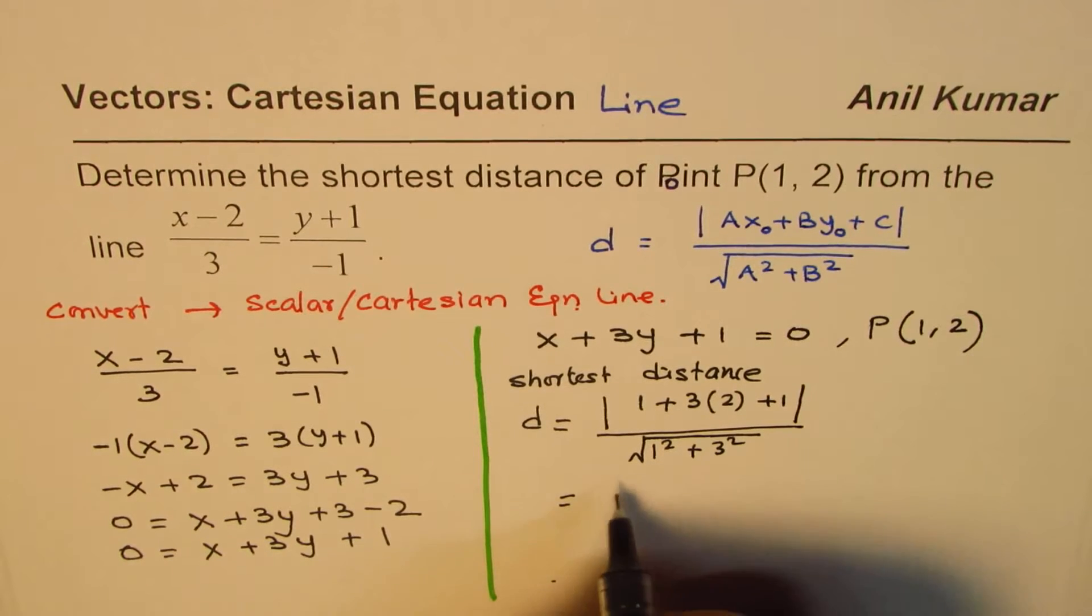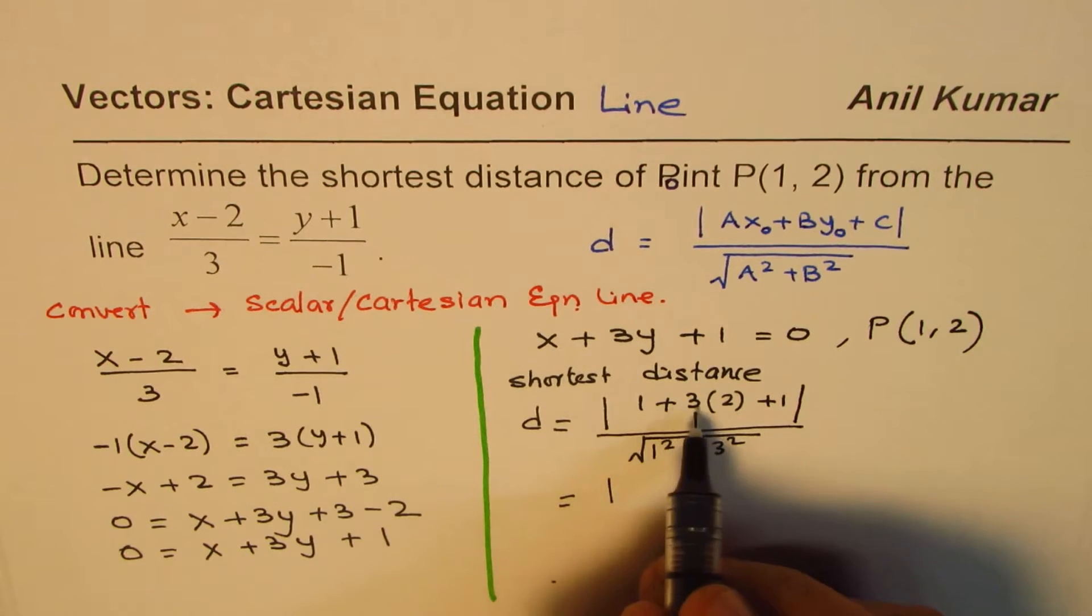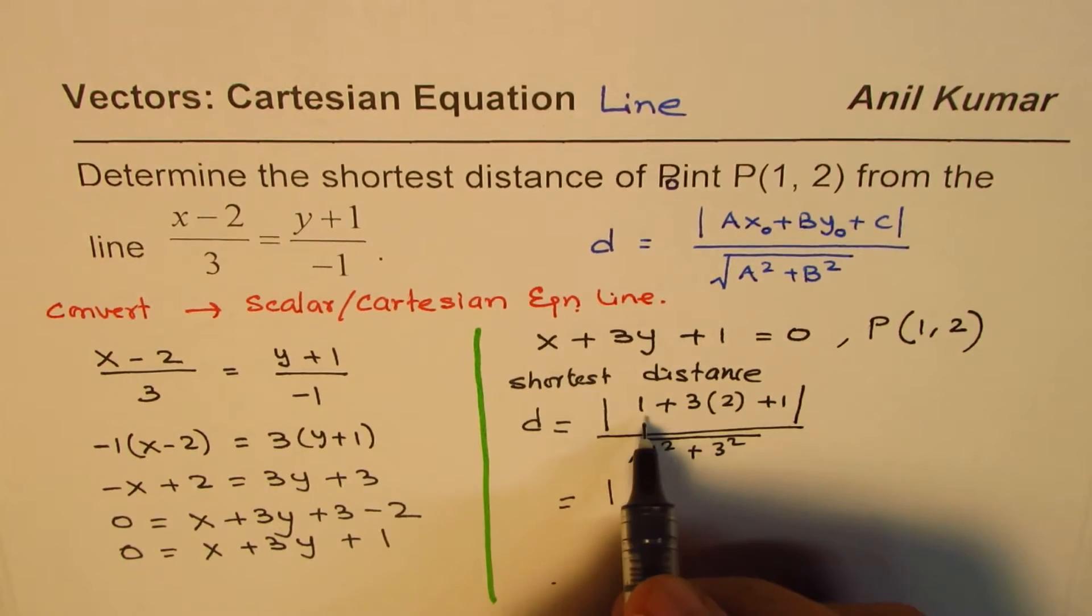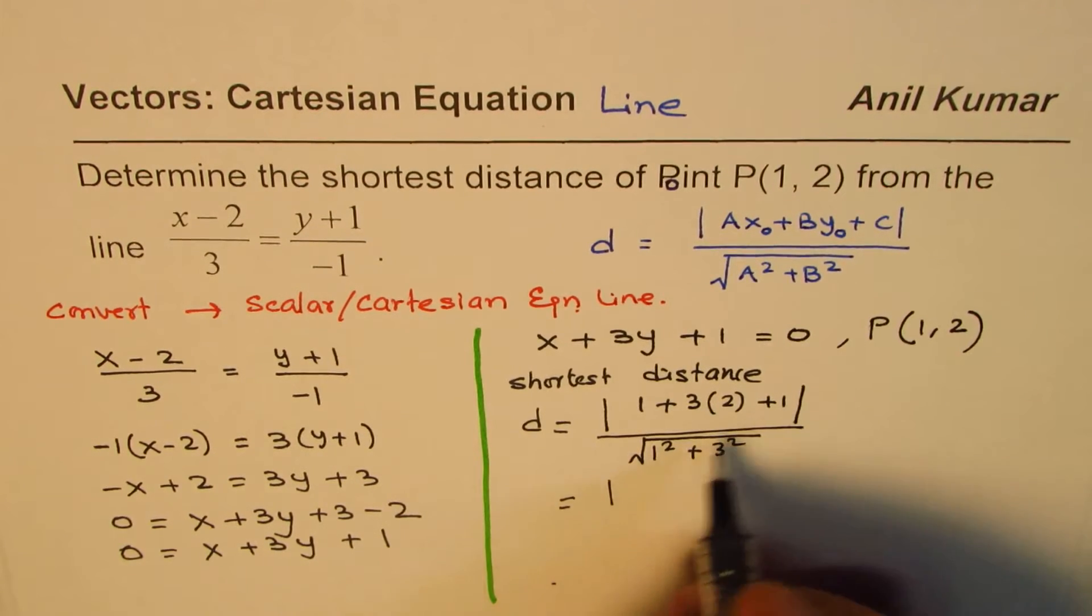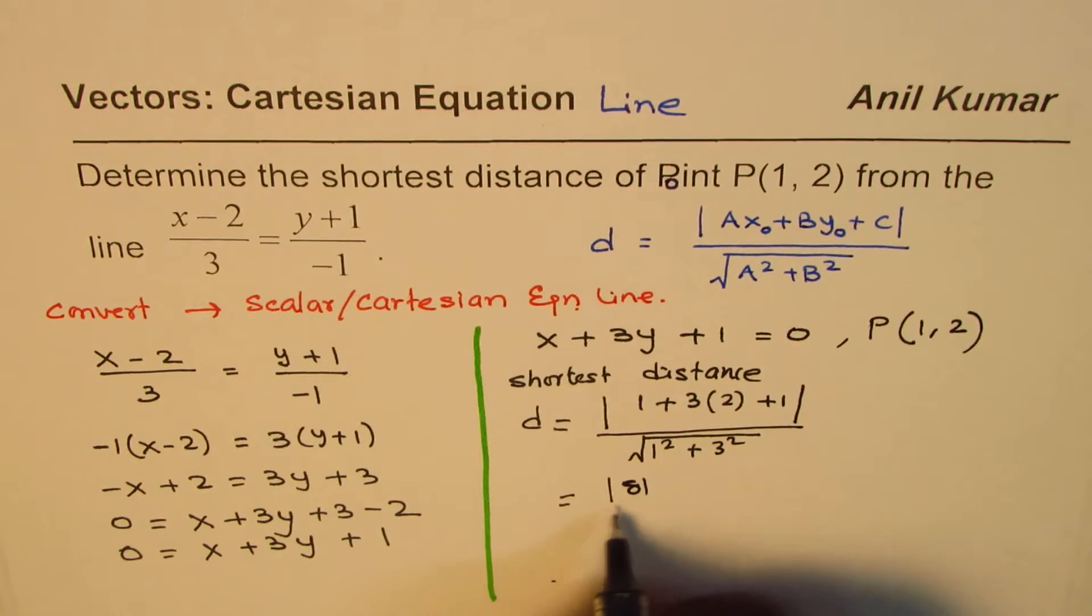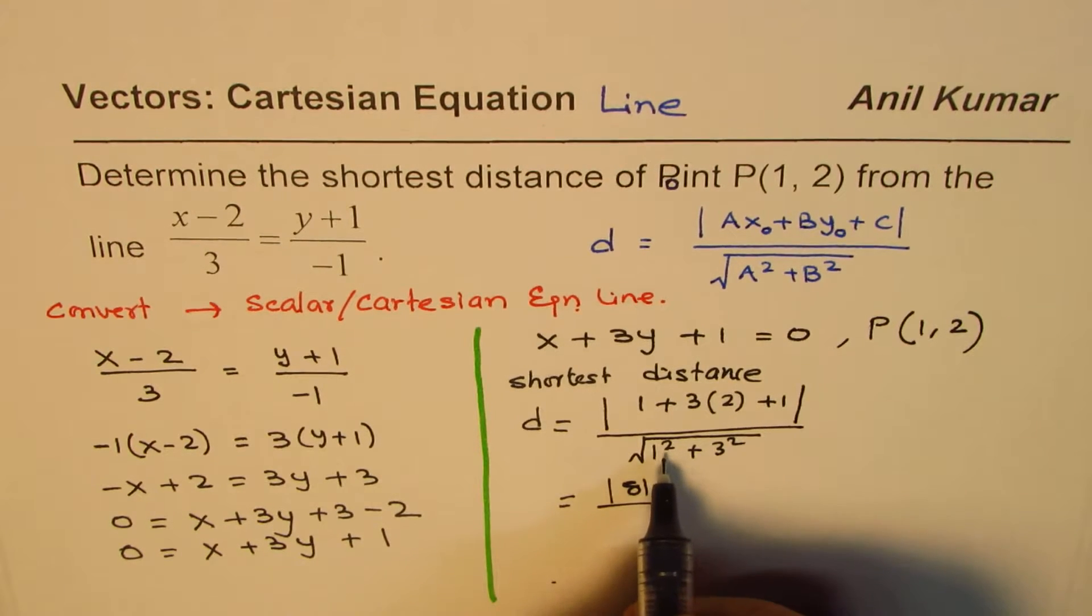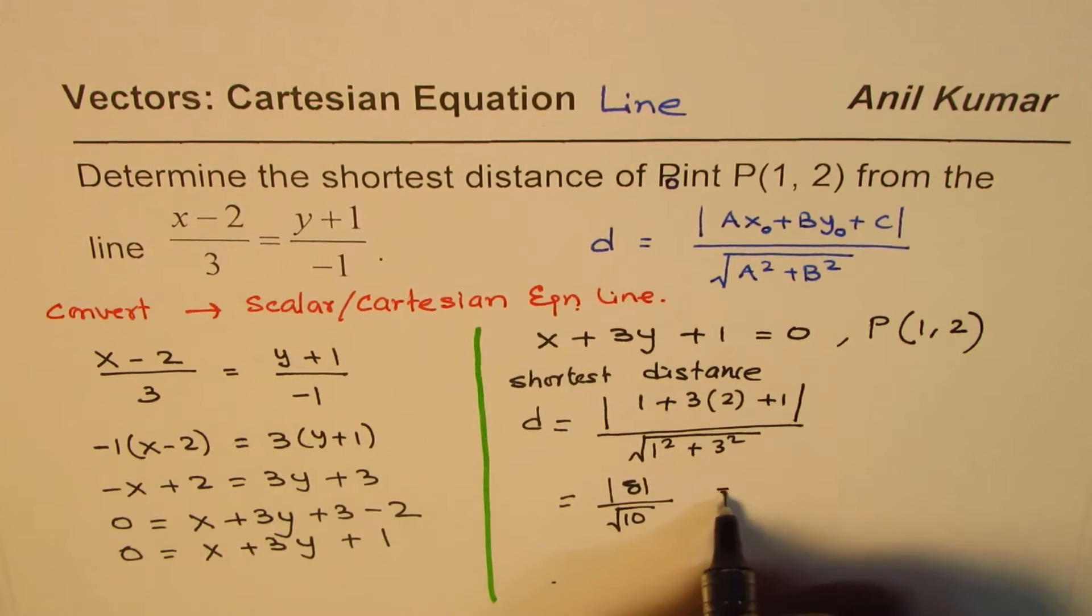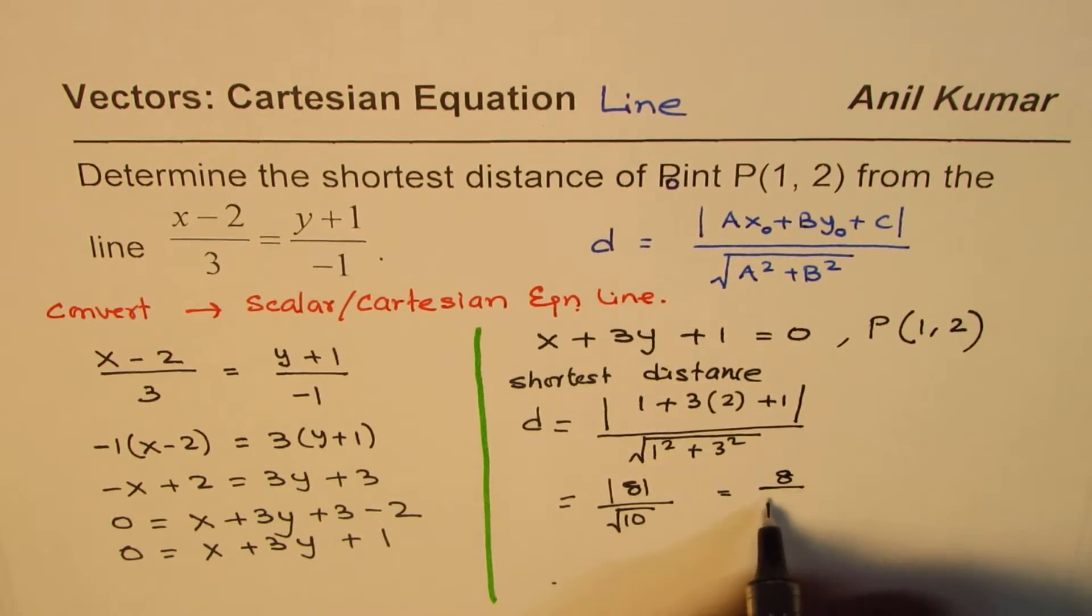So that gives us absolute value of 1, 3 times 2 is 6, 6 plus 1, 1 plus 6 is 7, 7 plus 1 is 8. So absolute value of 8 divided by 1 plus 9, which is square root of 10. What we get here is 8/√10 as our answer.